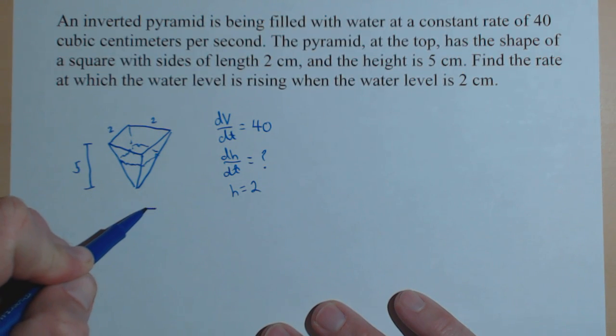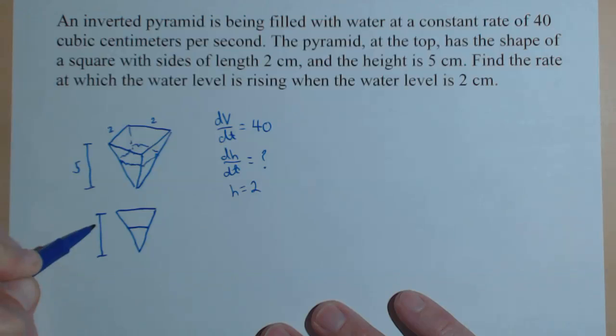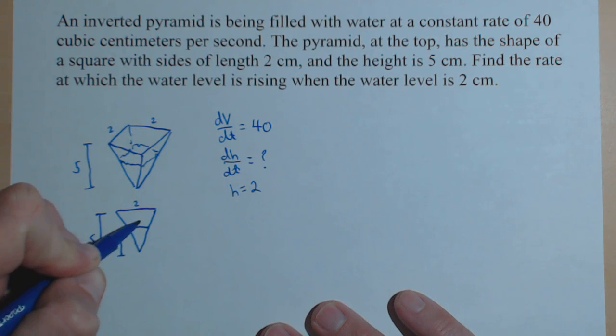If we were to look at this pyramid from the side, directly from the side, we'd see a triangle, and then here's our water. This big triangle is 5 by 2. We've called the height of this thing h, and let's call this width here x.